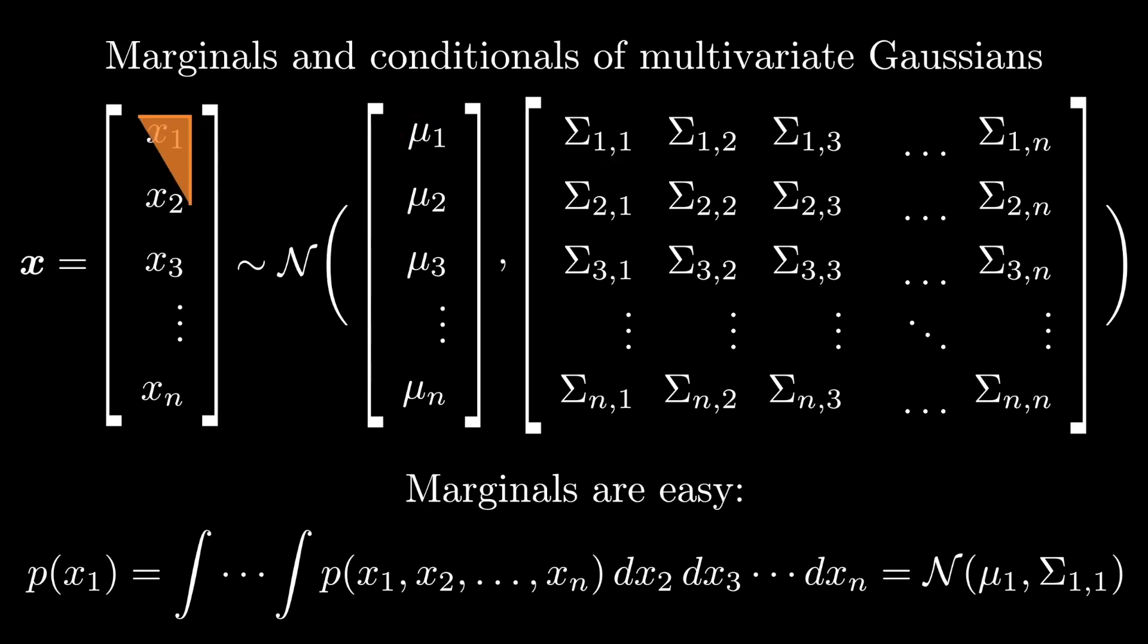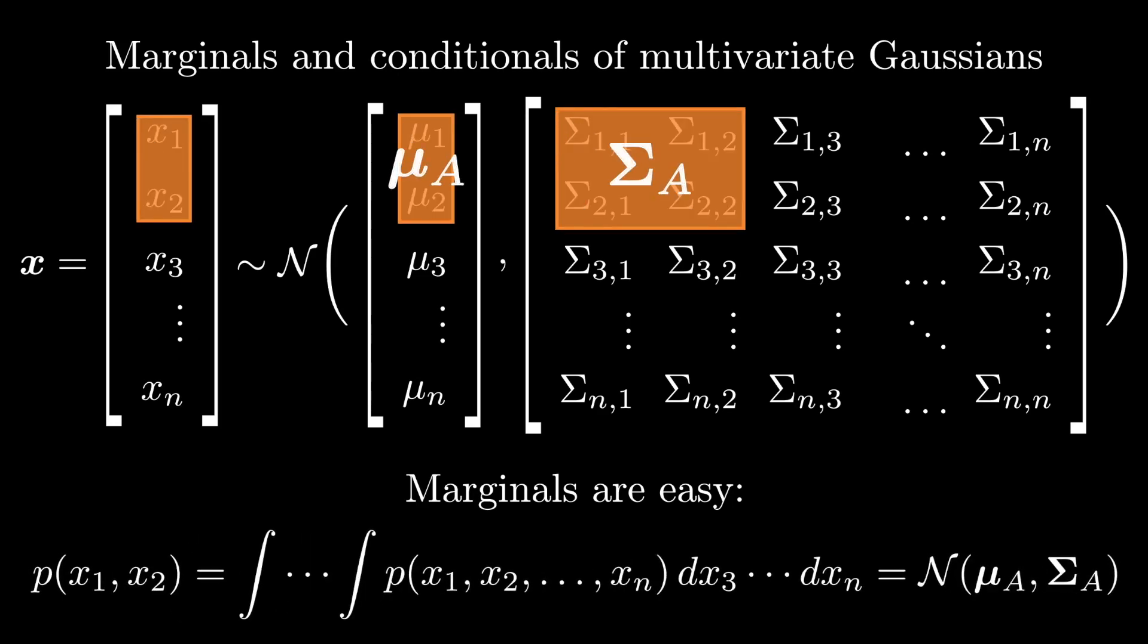This turns out to be true for multivariate marginals as well. If I want to ask about the subvector x₁, x₂, all I have to do is restrict my attention to the relevant subvector of the mean and the relevant submatrix of Σ. This turns out to be an incredibly useful property. In fact, there are objects called Gaussian processes in which it's possible to marginalize away an infinite number of other dimensions.